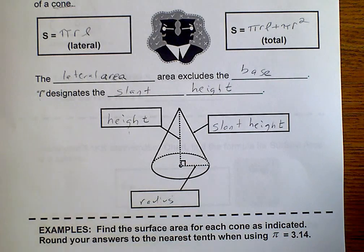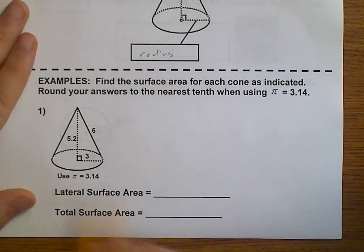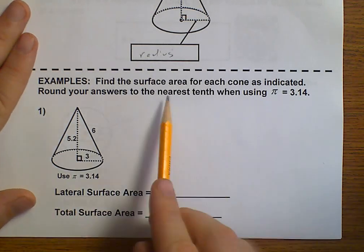Let's go ahead and do our first example. Alright, well they give us all the information, so we don't need to worry about it. And it wants this to the nearest tenth.